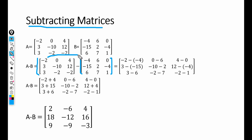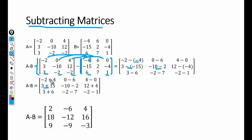For subtraction, we subtract the corresponding elements. The corresponding element of minus 2 is minus 4, of 0 is 6, and of 4 is 0. So we have minus 2 minus (minus 4); when this minus multiplies with minus, we get minus 2 plus 4. Then 0 minus 6, 4 minus 0, 3 minus (minus 15) becomes 3 plus 15, minus 10 minus (minus 2), then 3 minus 6, minus 2 minus 7, and minus 2 minus 1.